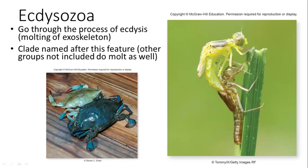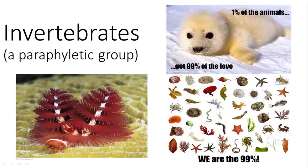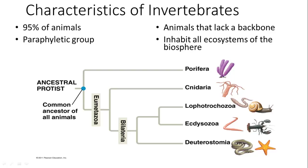Ecdysozoa is a group that goes through ecdysis, or molting, of their exoskeletons — they have an outer skeleton rather than an endoskeleton, and the clade is named after this feature. Now, 95% of animals are invertebrates; less than 5% are vertebrates. Vertebrates get more attention because they're more relatable to humans and are generally larger, but invertebrates are much more plentiful and diverse.